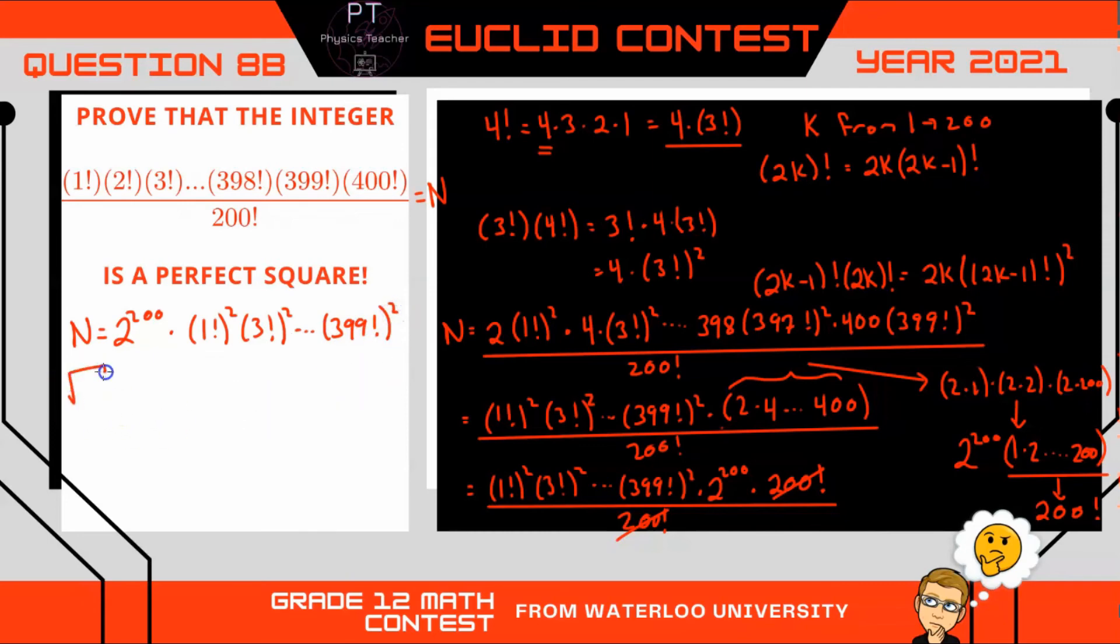So if I figure out what the square root of n is then, well that's just equal to 2 to the 100 times by, well all the squares are going to go away. So we have 1 factorial, 3 factorial, and so on, all the way up to 399 factorial.